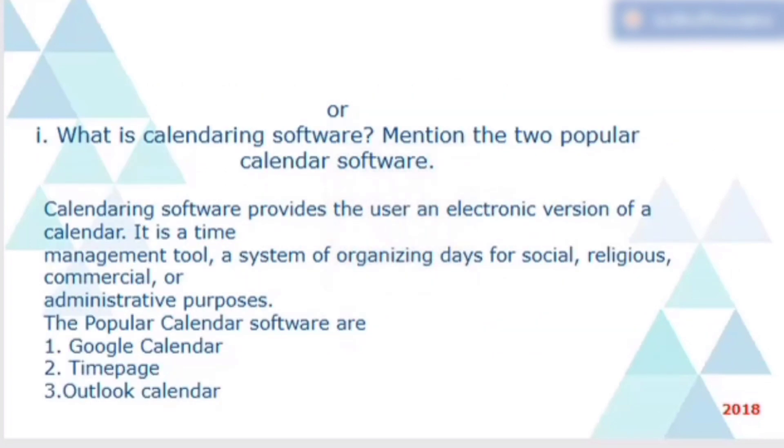As we can see, 2018 question paper was mostly depend on email messaging unit for most of four mark questions. Now, in an odd question, what is calendar software? Mention two popular calendar softwares. Calendaring software provides the user an electronic version of a calendar. It is a time management tool, a system of organizing days for social, religious, commercial or administrative purpose. The popular calendar softwares are Google Calendar, Time Page, Outlook Calendar, etc.